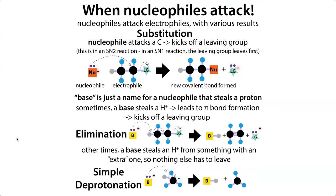When the nucleophile attacks an electrophile, we can get a few different fates: substitution, elimination, and deprotonation — which we typically call the nucleophile a base in that case. In order for a nucleophile to attack and get any of these fates, we need that nucleophile to be strong and our electrophile to be strong. We'd want our nucleophile to be strong, our electrophile to be strong, and our leaving group to be stable on its own — if we're doing a substitution reaction.